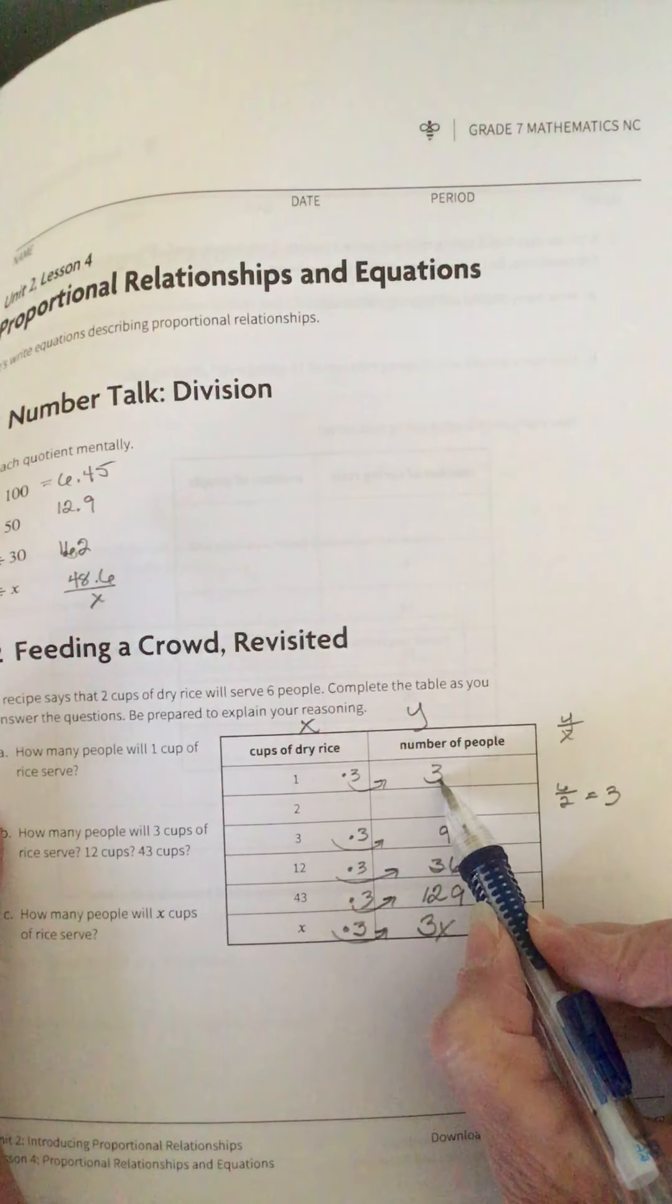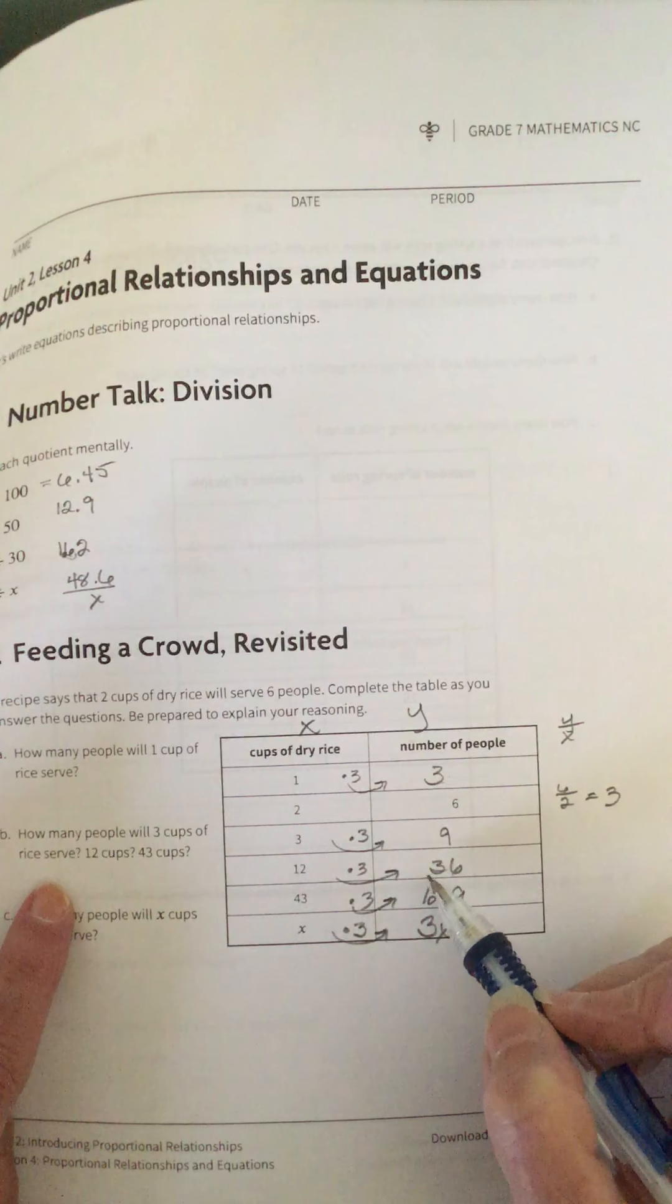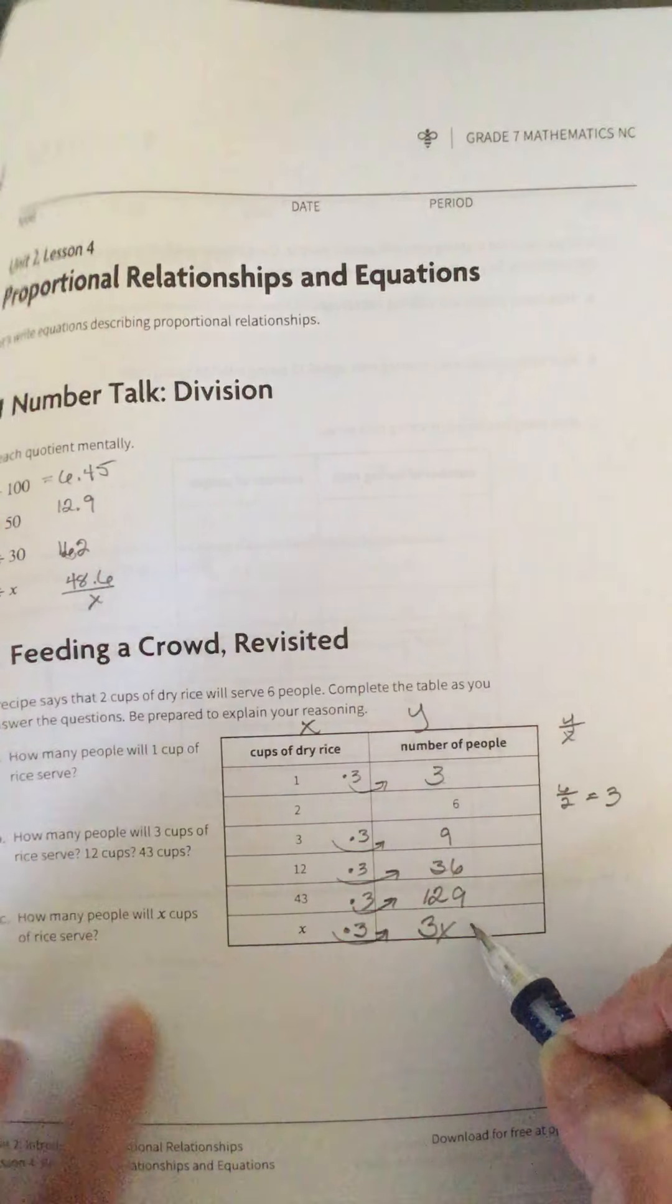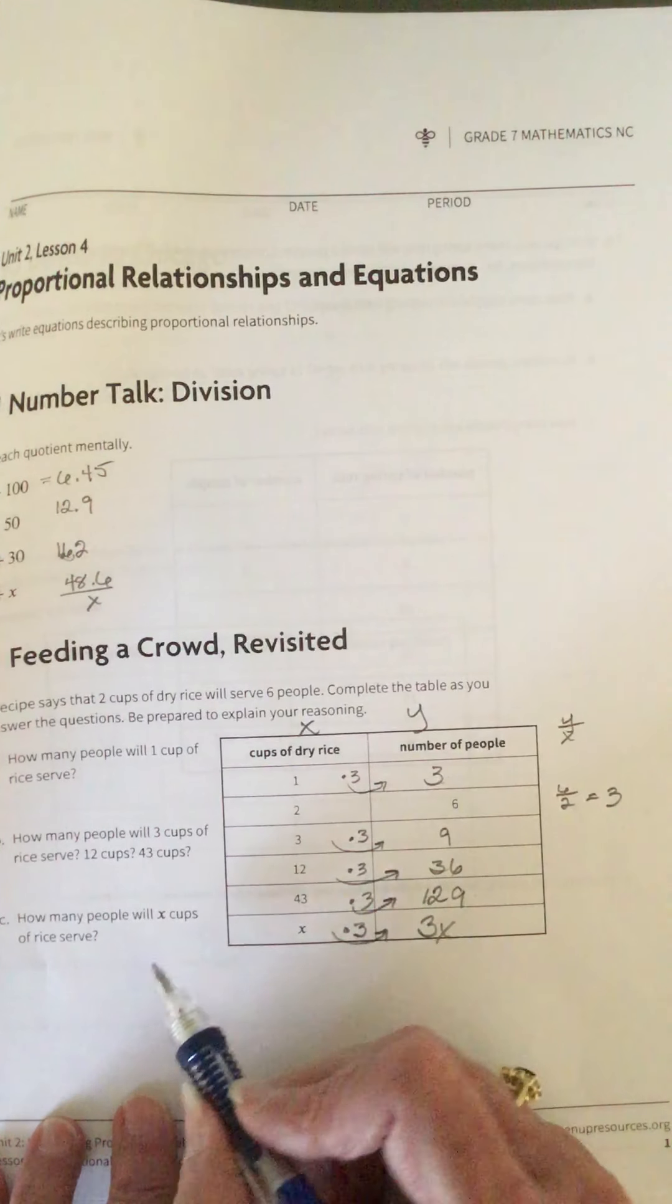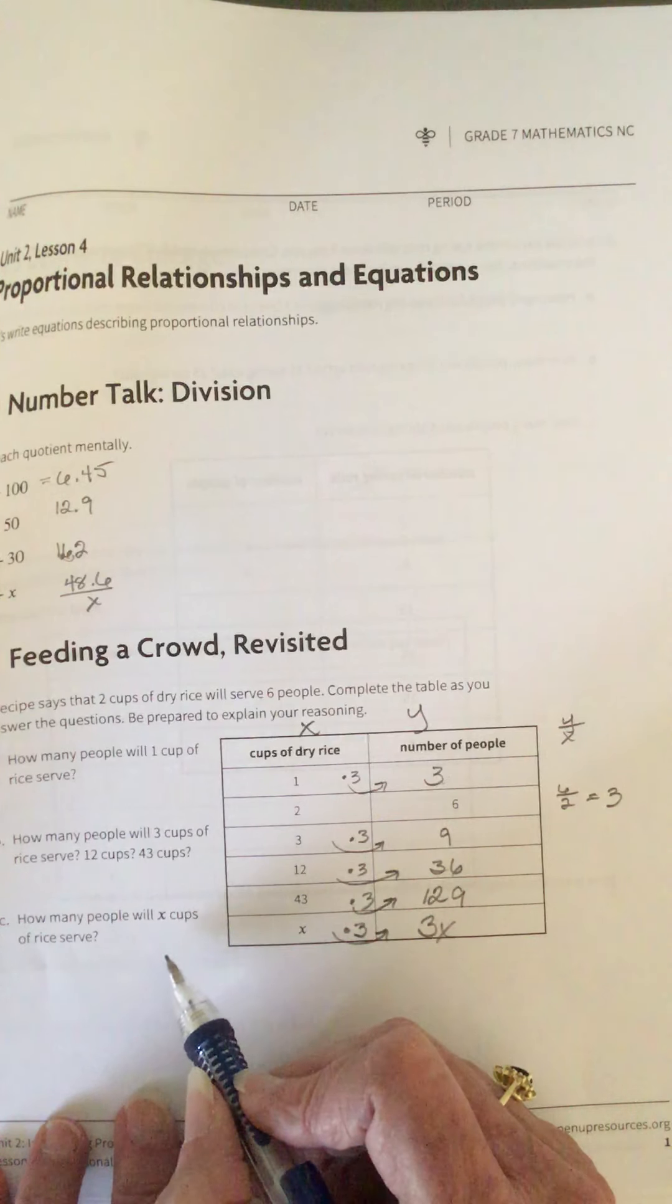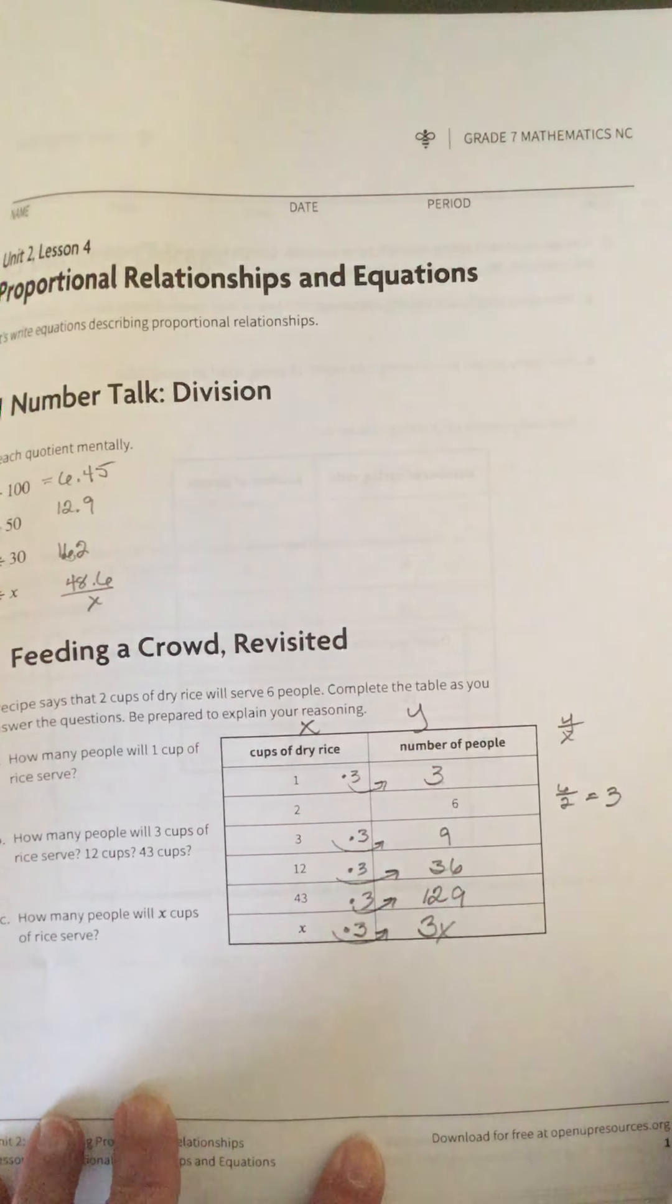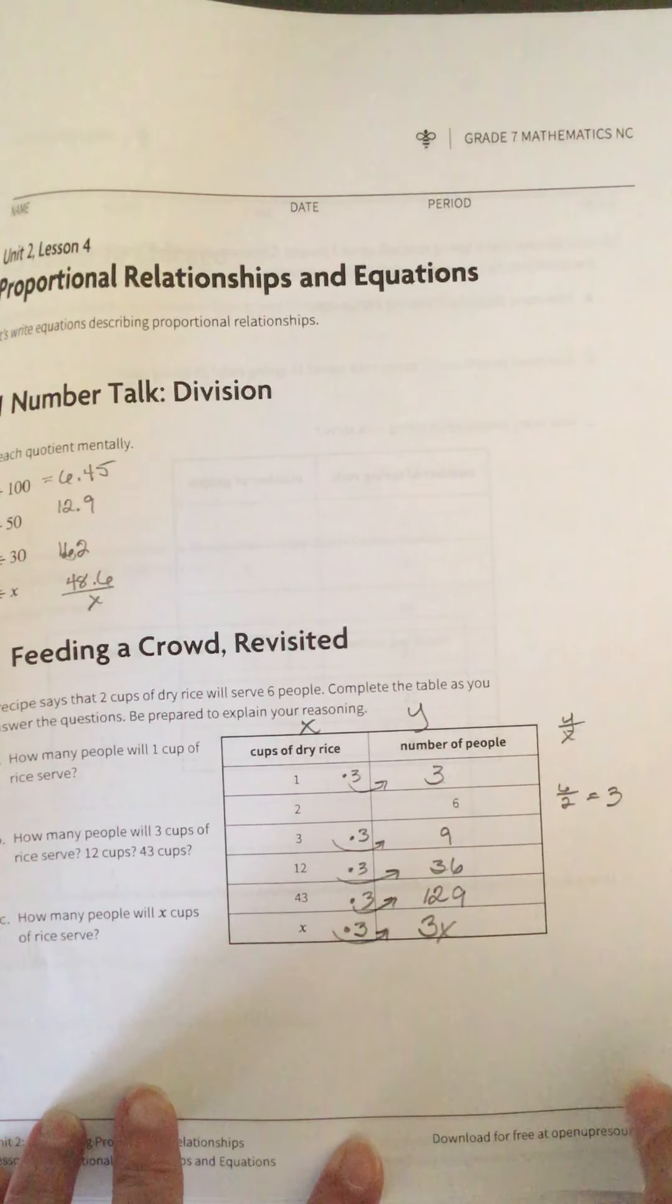6 times 3 here, let's see, 3 times 3 is 9, 3 times 4 is 12, so 129. And X times 3 will be written as 3X. Alright, so we've answered all these questions over here. 1 cup will be 3 people, 3 cups is 9 people, 12 cups is 36, 43 cups is 129, and X cups, any number of cups, is going to be 3 times the number of cups.